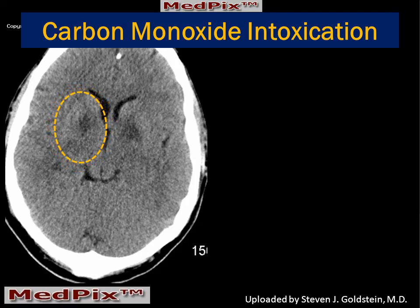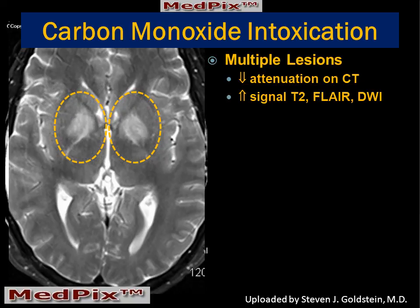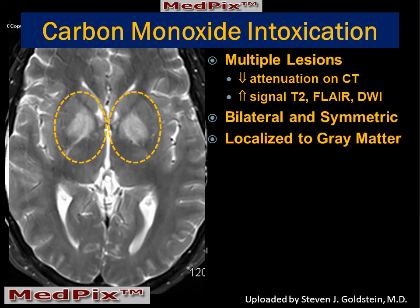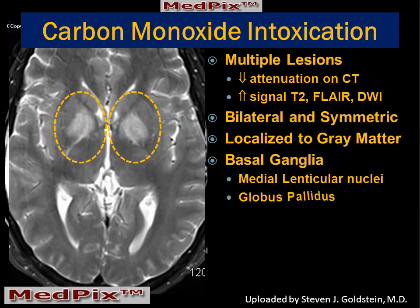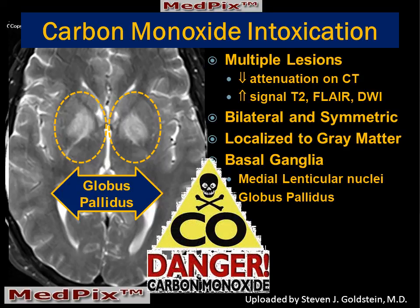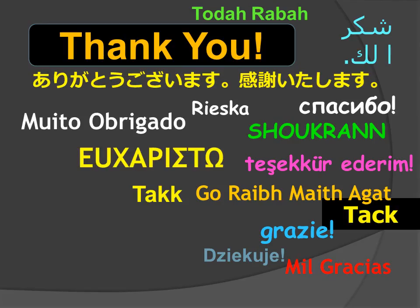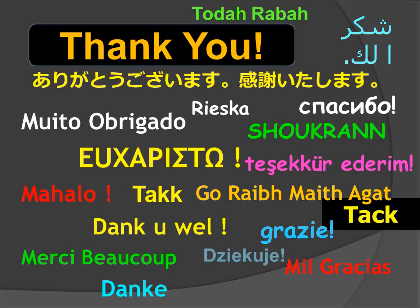In summary, our patient had carbon monoxide intoxication, demonstrating the classic lesions involving the medial portion of the lenticular nucleus that are bilateral and symmetric. This is the pattern we expect to see with carbon monoxide intoxication. Carbon monoxide is a tasteless, odorless gas that can be produced by a variety of equipment, including using a generator inside during a power failure. I'm Jim Smyrniatopoulos, and I have approved this message. Thank you kindly for your attention.